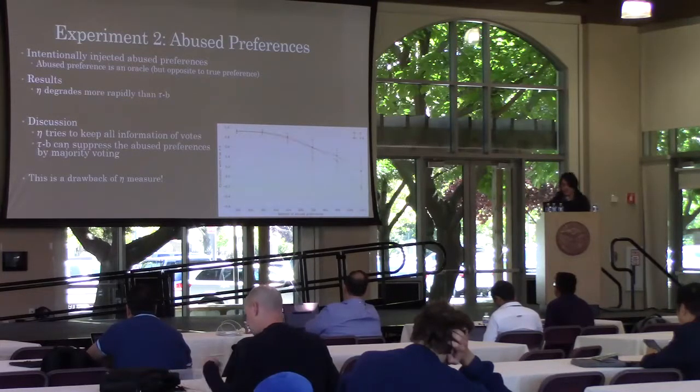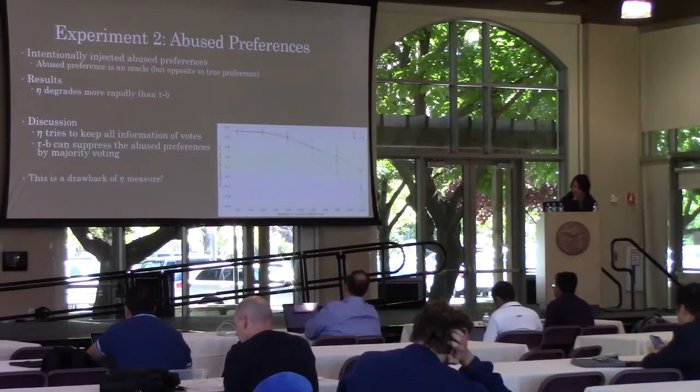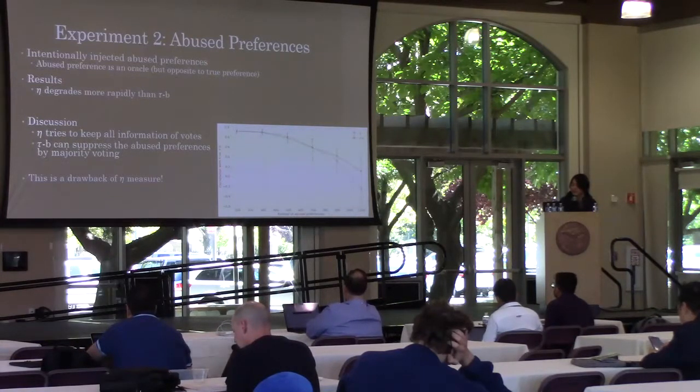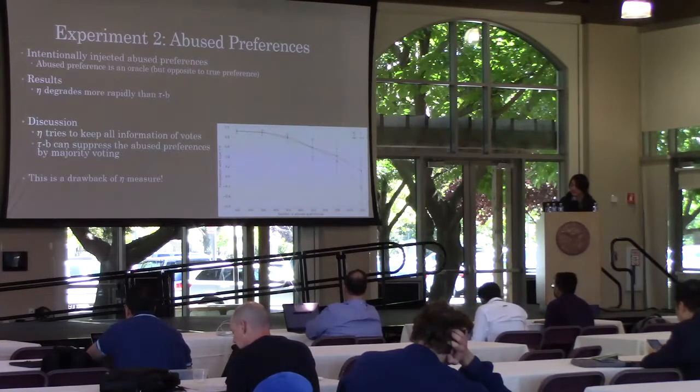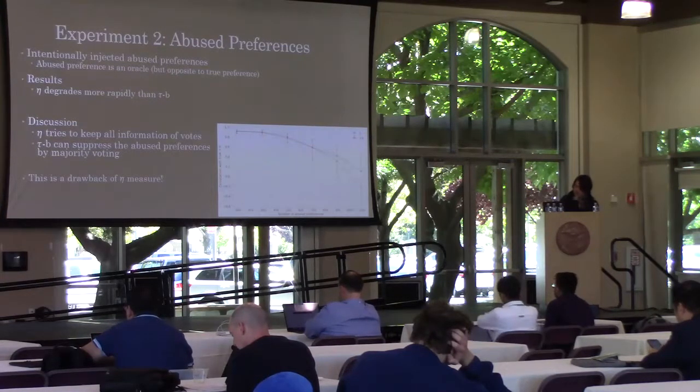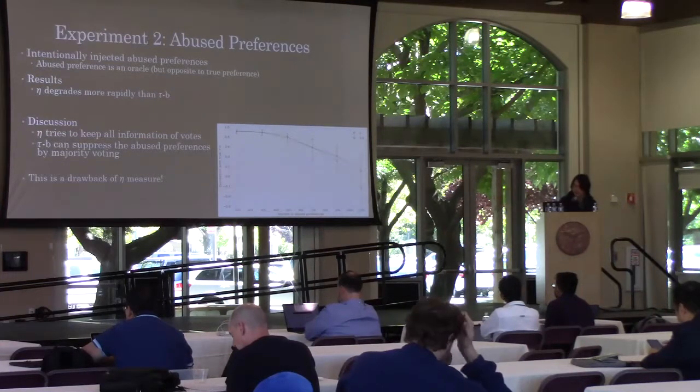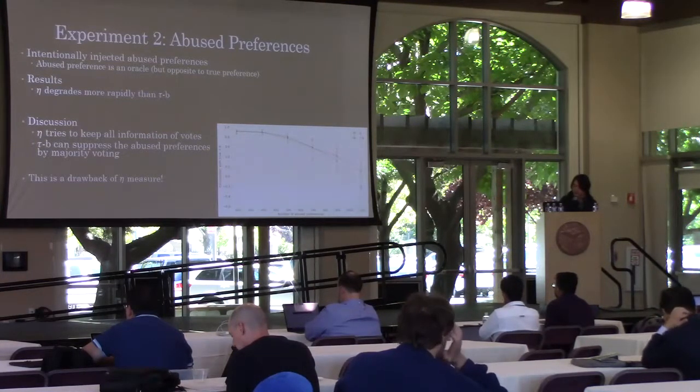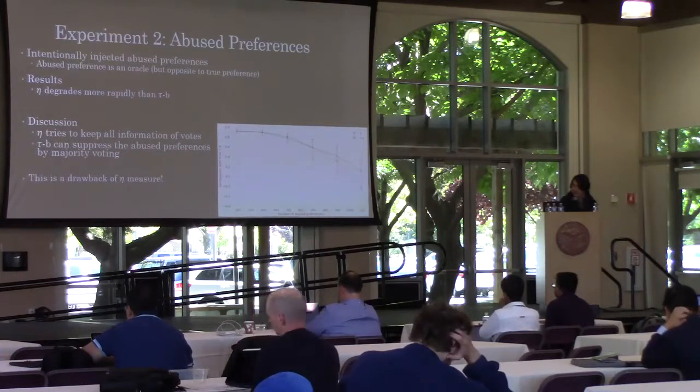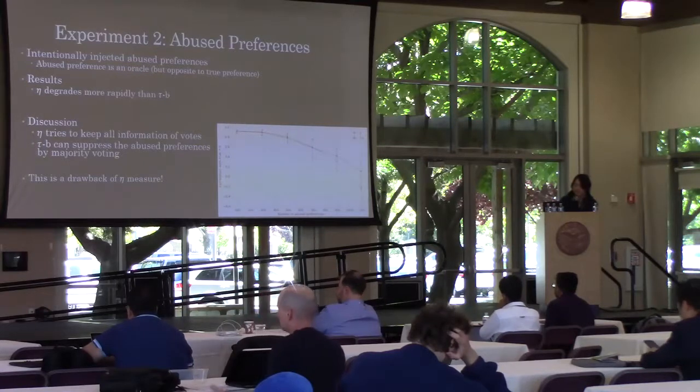Next, we investigate the effect of the number of abusers. We intentionally injected abusive preferences. That is correct but opposite to true preference. Eta degrades more rapidly than tau. This is because eta tries to keep all information from labels, even from abusers, while tau can suppress the abusive preferences by majority voting. This is a drawback of the eta measure.